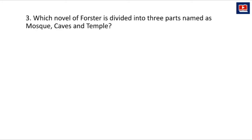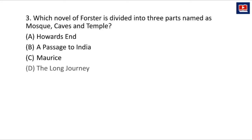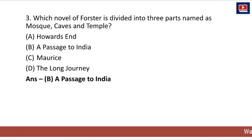The next question is: which novel of Forster is divided into three parts named as Mosque, Caves, and Temple? The options are Howard's End, A Passage to India, Maurice, and The Longest Journey. The right answer is A Passage to India. It is a very popular novel by E.M. Forster which has three distinct sections: Mosque, Caves, and Temple.